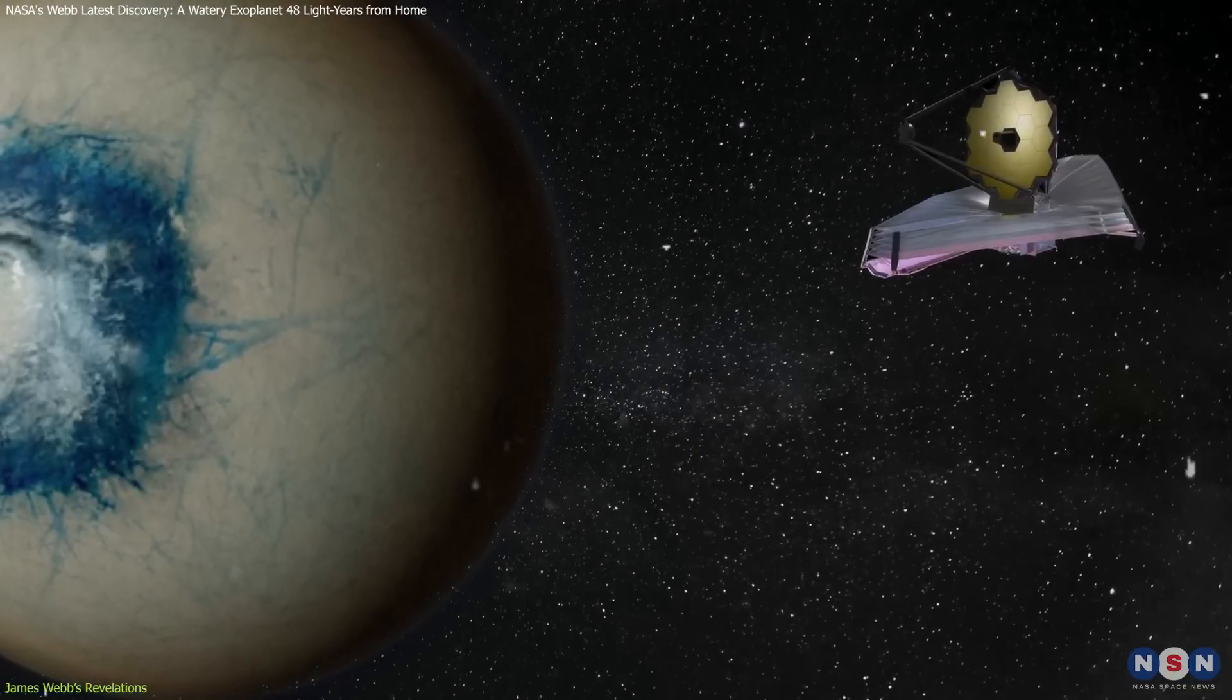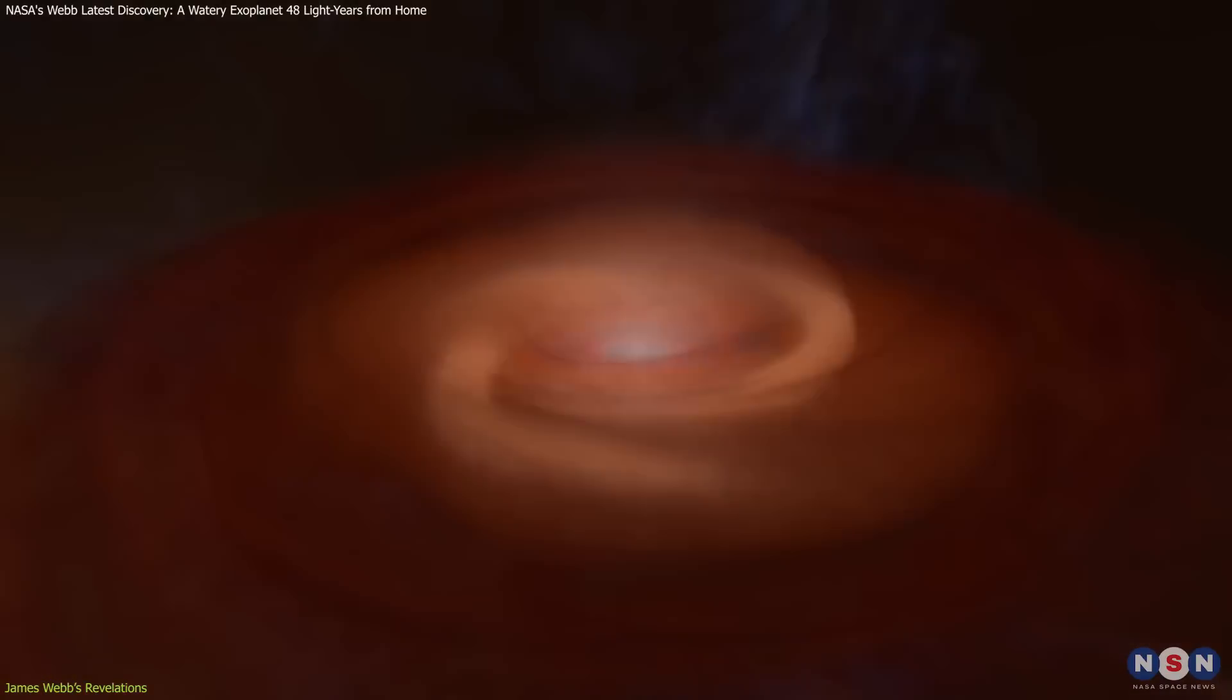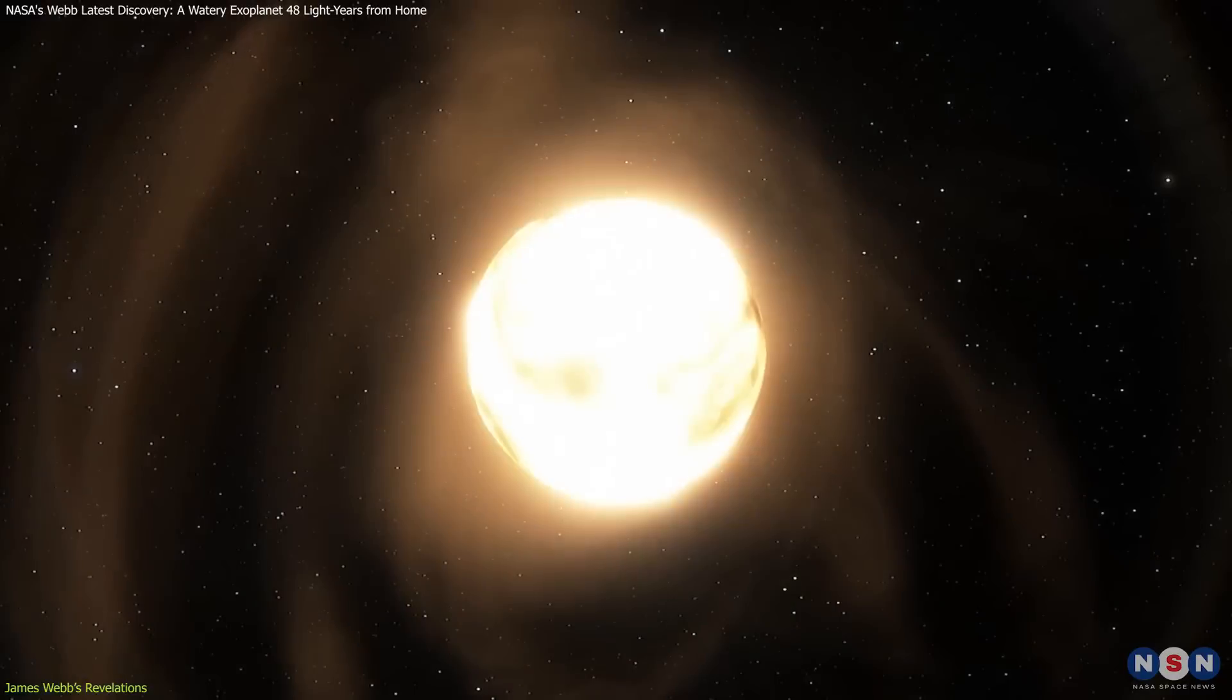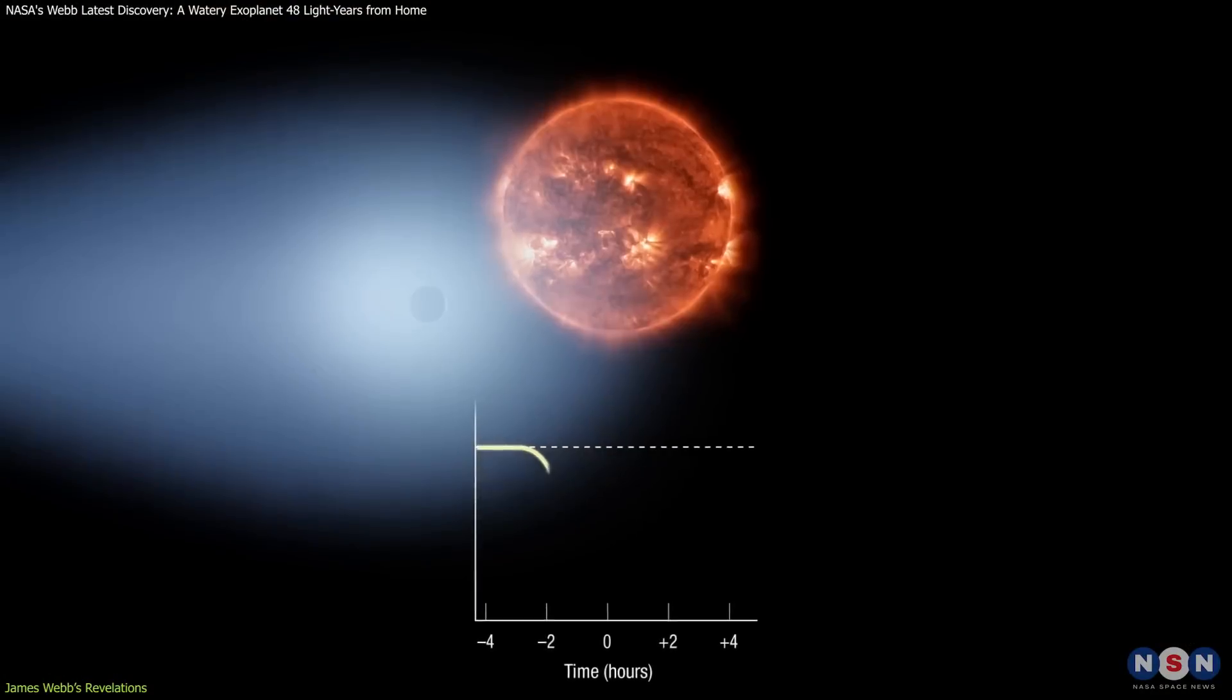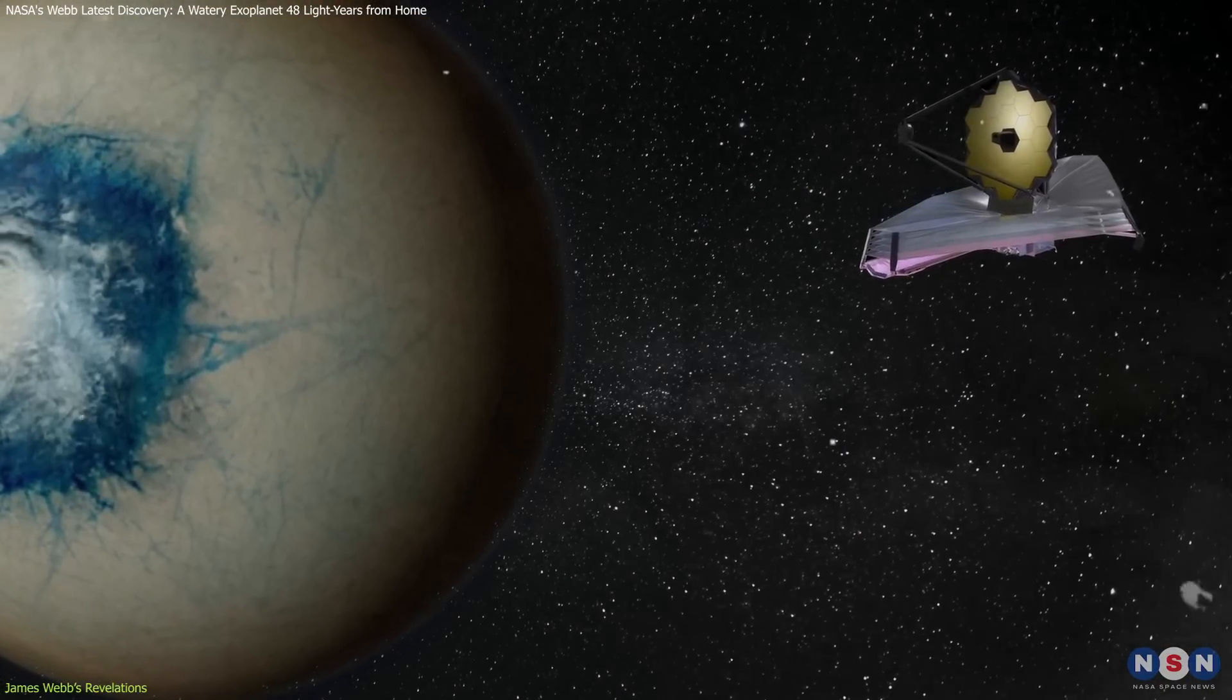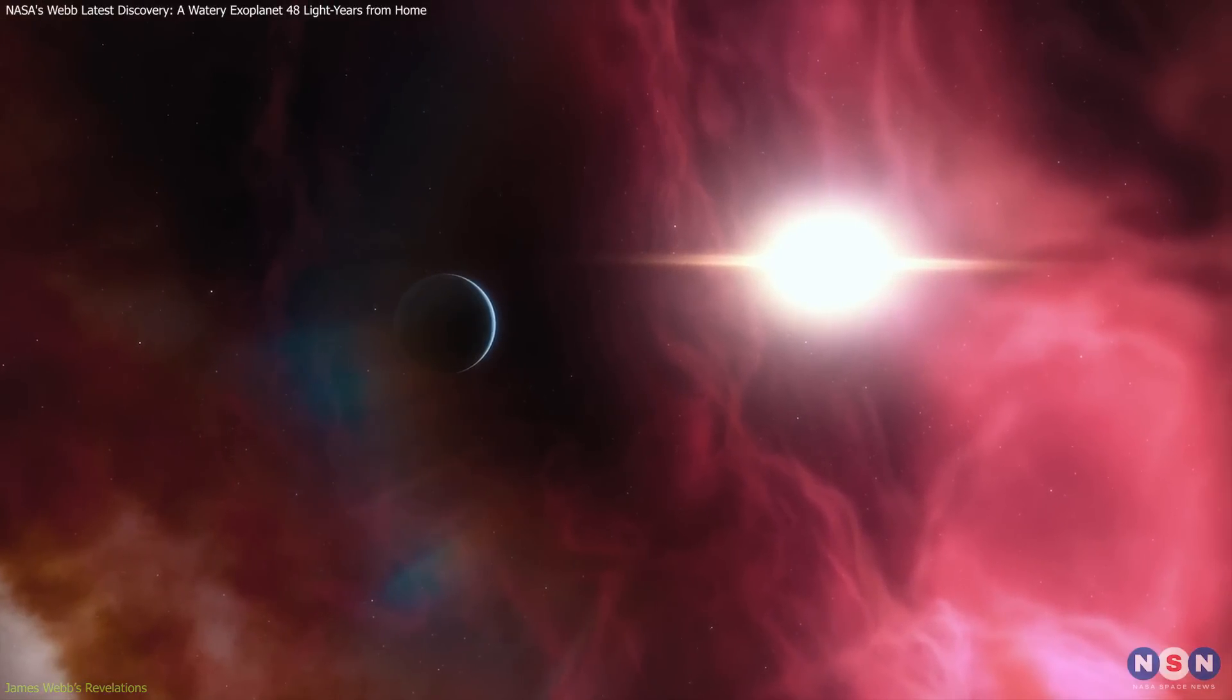Moreover, Webb's findings on this exoplanet challenge our understanding of planet formation and atmosphere retention in super-Earths orbiting red dwarf stars. Red dwarfs are smaller and cooler than our sun, and they tend to exhibit more intense magnetic activity, which can strip away planetary atmospheres. That this exoplanet retains such a substantial atmosphere suggests it may have protective mechanisms or a magnetic field shielding it from stellar winds.